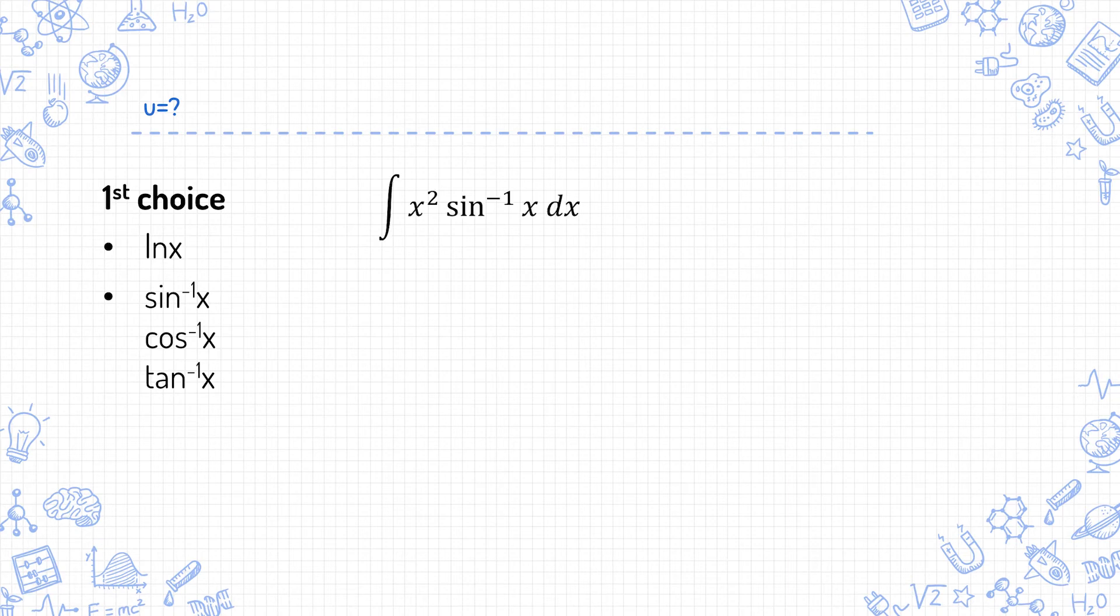So for this, you would choose u equals sin inverse x and dv/dx equals x squared. For this, you would choose u equals ln x and dv/dx equals x. In fact, even if you have an inverse trig or ln function on its own, you can use integration by parts with dv/dx equals 1. So to integrate cosine inverse x, you will use u equals cosine inverse x and dv/dx equals 1. And to integrate ln x, you will use u equals ln x and dv/dx equals 1.